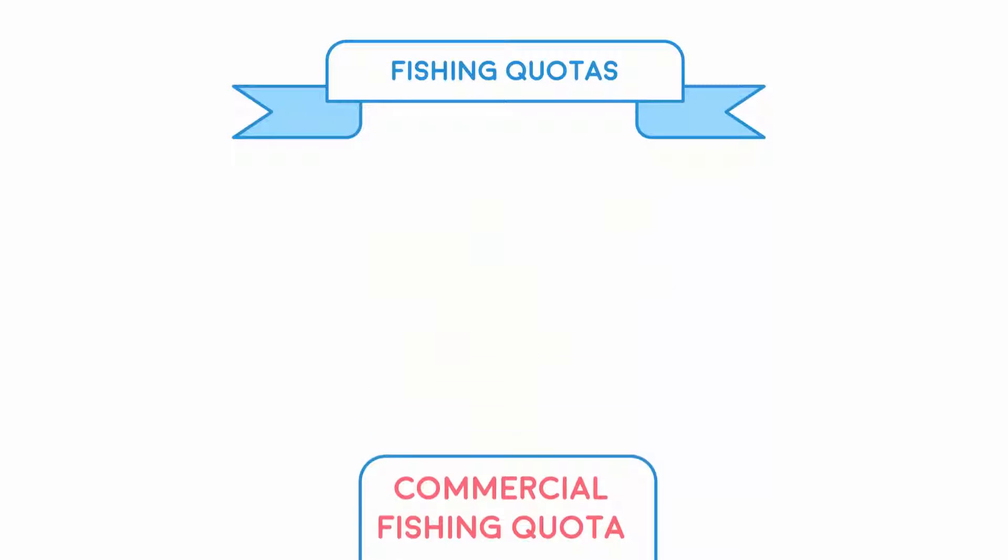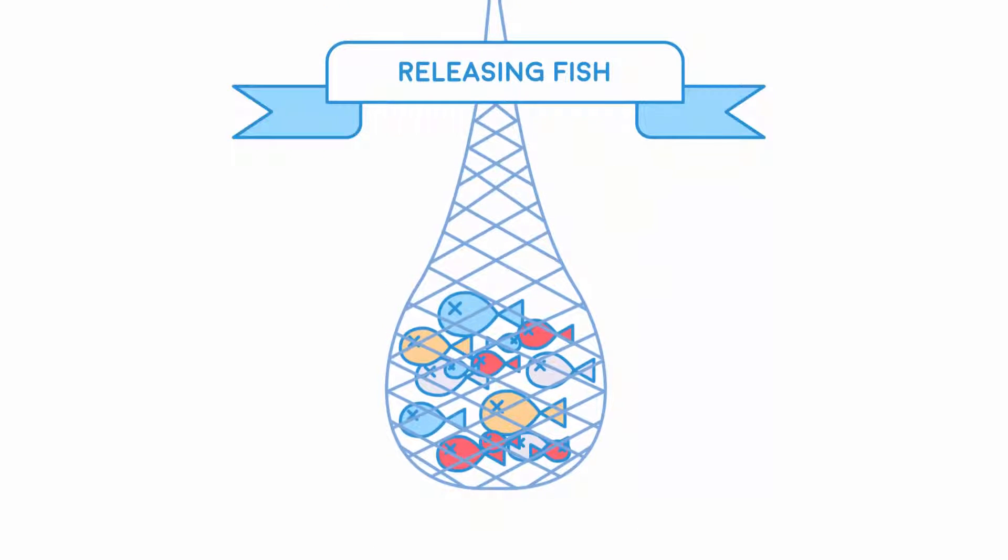The holes on fishing nets have to be large enough to let the smaller, younger fish escape. This then gives them the chance to reproduce and help maintain the population.